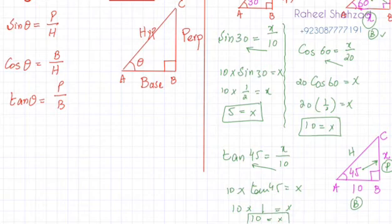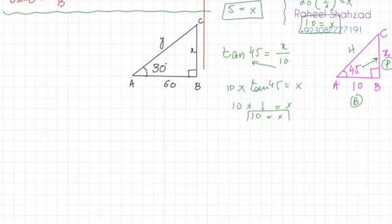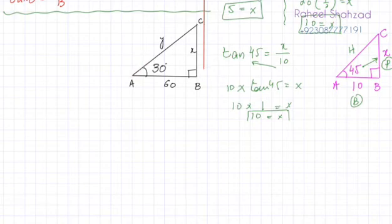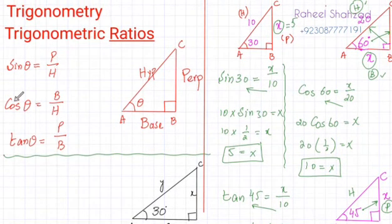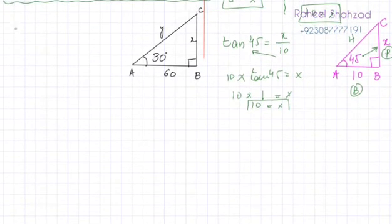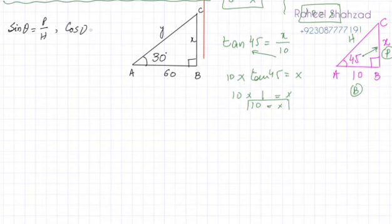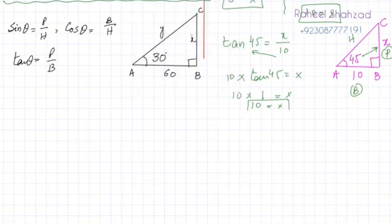In the next question, triangle ABC is a right angle triangle with 30 degrees given. Both the hypotenuse and perpendicular are missing (x and y). For students just starting this topic, I suggest writing on the side: sine = perpendicular/hypotenuse, cos = base/hypotenuse, and tan = perpendicular/base. We need to find both x and y.